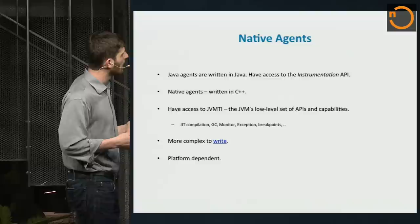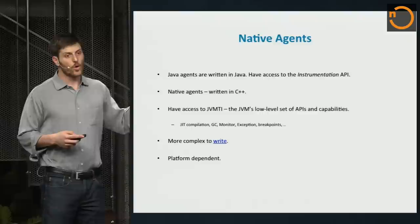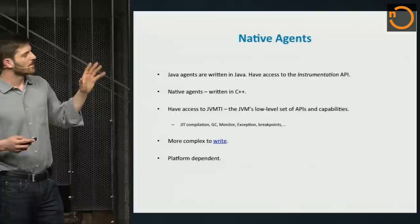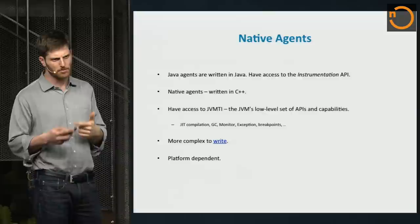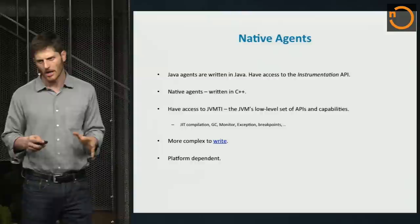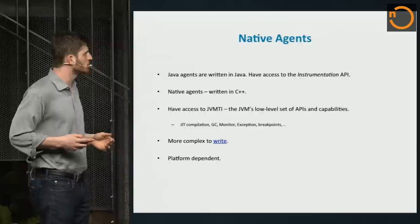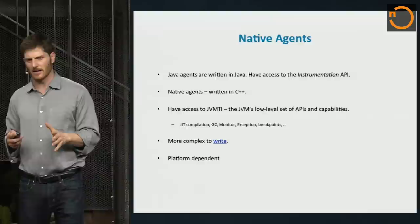The second group of agents are called native agents. This is a whole other beast — if you really want to go super deep, this is as deep as you can possibly go with the JVM. This is saying I want code that enables you not just to debug my code or change bytecode, but to get access to everything happening within the JVM. Native agents are written in C++, so you're writing at the JVM level using something called JVMTI — a super robust API in C++ provided by the JVM.